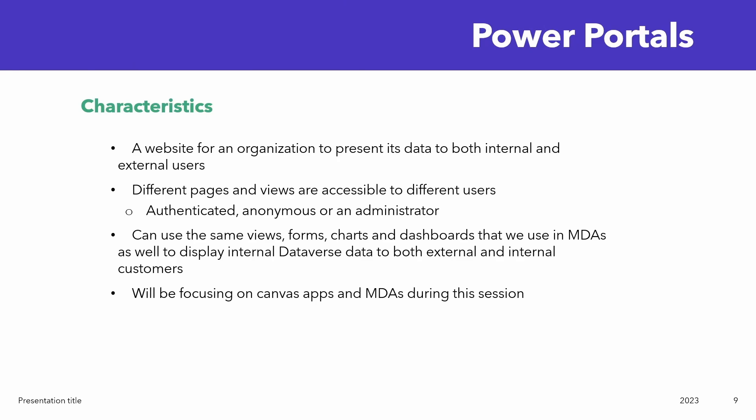So the third type of Power App is Power Portals — we're not going to go in-depth with that one, but basically they are websites that an organization can use to present its data to external users. The other app types are normally available for just internal users who have a license and need to be logged in. But Power Portals, because it's a website, allows you to administer anonymous users and dictate what pages and forms you expose to them. We're going to focus primarily on Canvas apps and model-driven apps during our session.